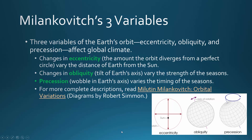Just to recap, the three variables that change are: eccentricity, which is the shape of Earth's orbit; obliquity, meaning the axis of rotation changes between 22 and 24 degrees; and precession, which is the wobble in Earth's axis that causes the timing of the seasons to shift slightly. If you'd like more information, you can read the Milutin Milankovic orbital variations website.